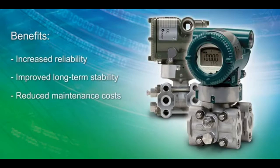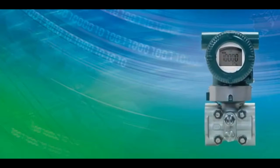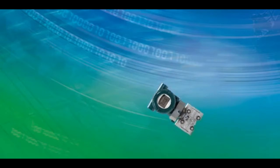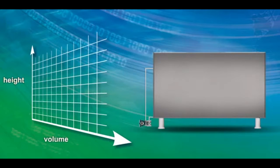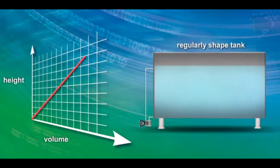A differential pressure transmitter measures level in a tank by measuring the height of the liquid. For regularly shaped tanks, the height is directly proportional to the volume in the tank.